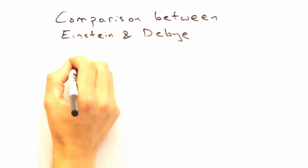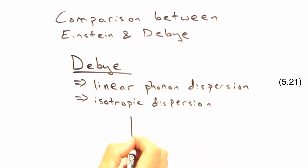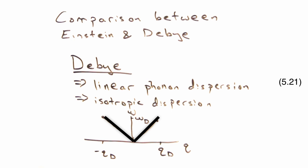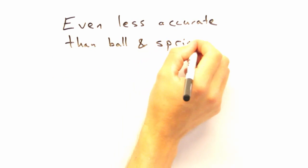With the Debye model, we'll instead invoke linear isotropic dispersion. In this case, we can plot omega versus the magnitude of our wave vector Q like this. Looks like this doesn't even capture all the details of the ball and spring model from earlier.